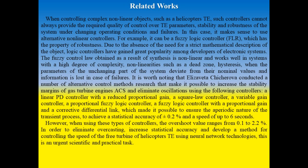However, when using this type of controllers, the overshoot value ranges from 0.1 to 2.2 percent. In order to eliminate overcasting, increase statistical accuracy and develop a method for controlling the speed of the free turbine of helicopter's turboshaft engines using neural network technology.